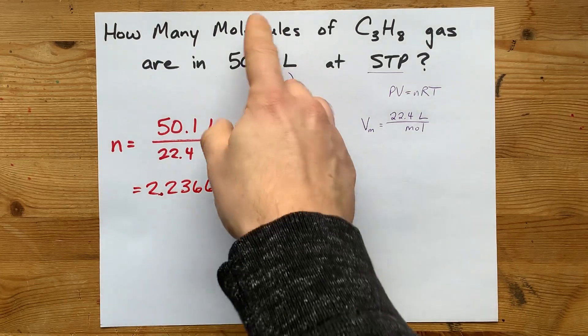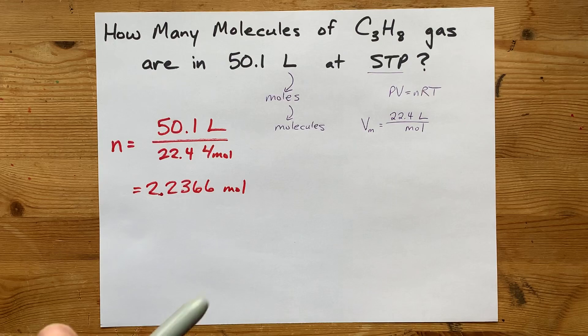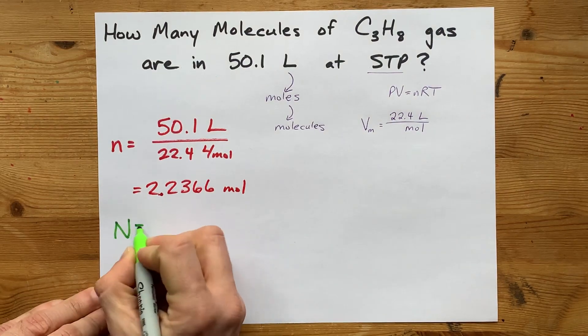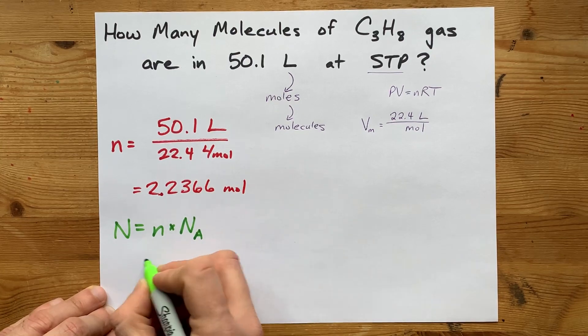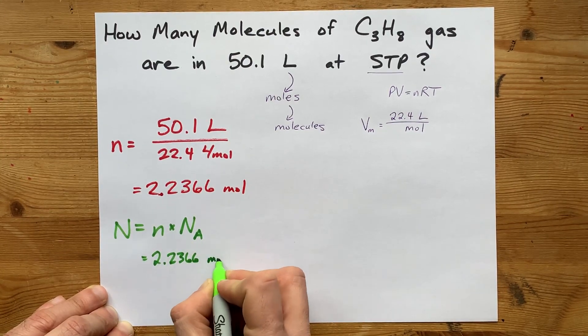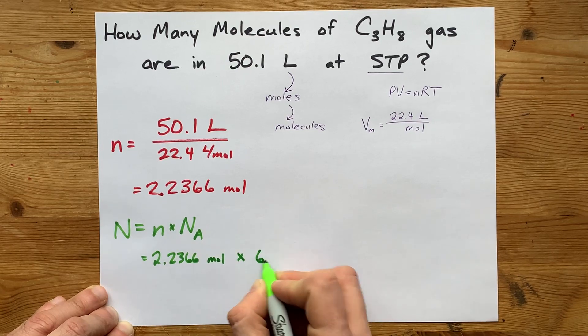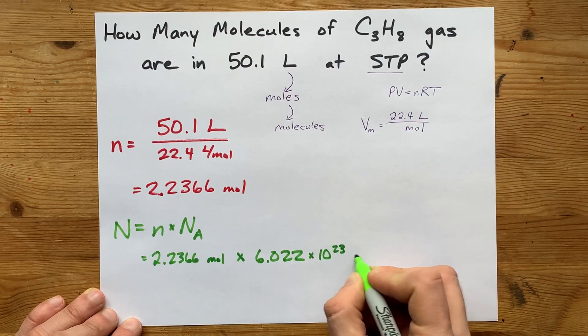Now, we were asked for number of molecules. How do you convert moles to molecules? That's pretty straightforward. You're going to take the number of moles and multiply it by Avogadro's number. 2.2366 moles times Avogadro's number is a constant, 6.022 times 10 to the 23.